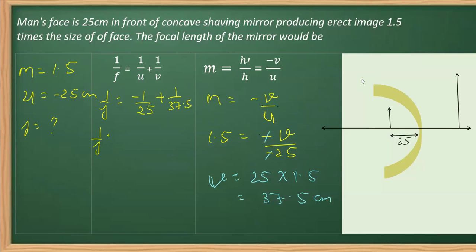In order to reduce it further, I will be writing this as 1 over 25. But this I can write as 10 over 375. Further I can reduce: this is 5, 2 times 5. This is 5, 7 and 5, 75 times.